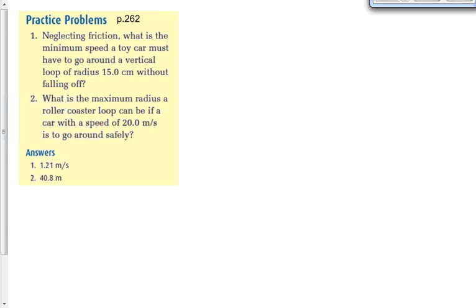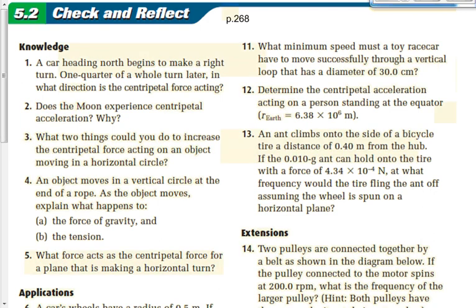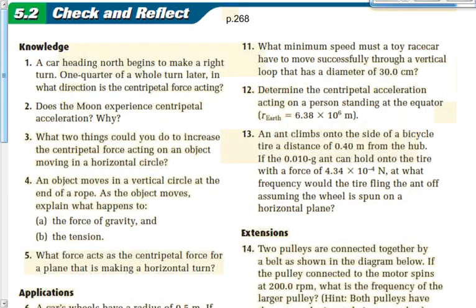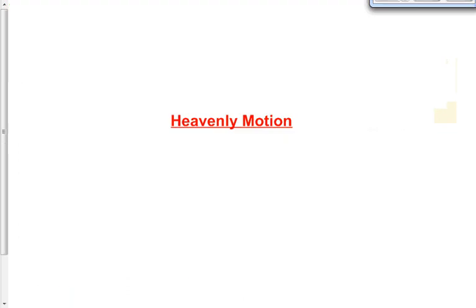Now we're going to shift gears. Over the next week we'll still talk about circular motion, but a very specific case: when the Earth or other planets revolve around the Sun. This is heavenly motion — the motion of planets, moons, and other heavenly objects around stars and planets.